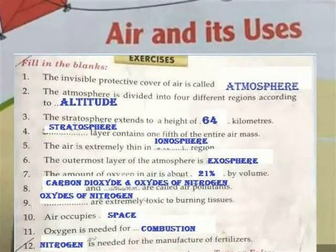Fill in the Blanks. The protective cover of air is called the Atmosphere. The atmosphere is divided into 4 different regions according to altitude. The stratosphere extends from 10 to a height of 64 km. The stratosphere layer contains one-fifth of the entire mass of air.